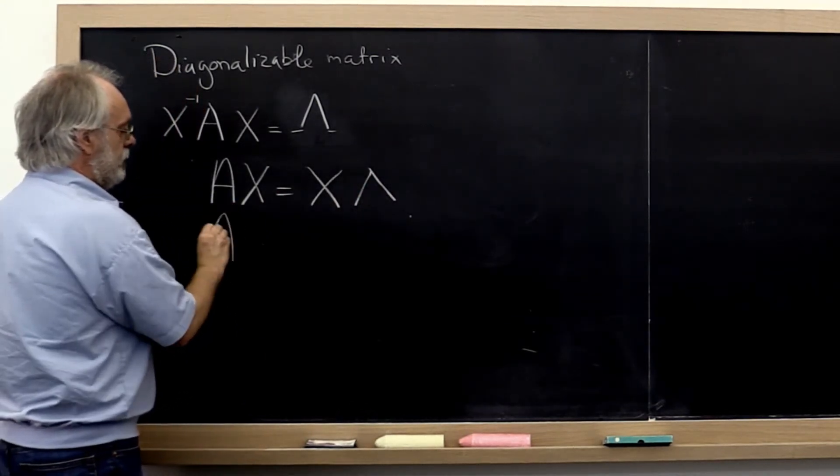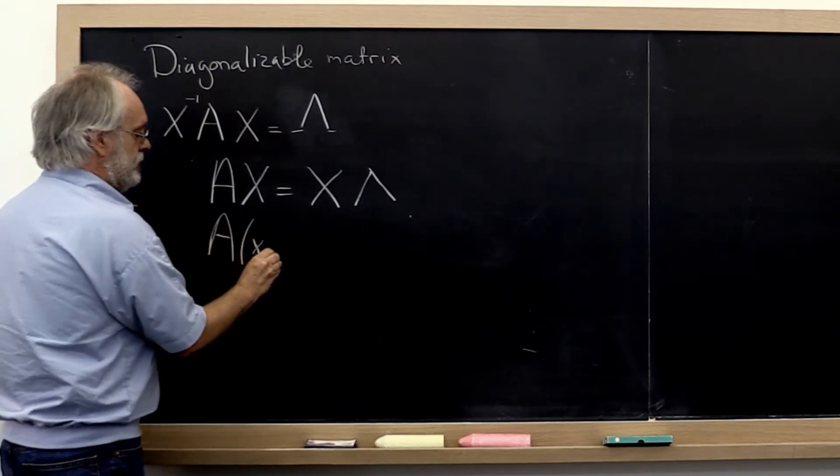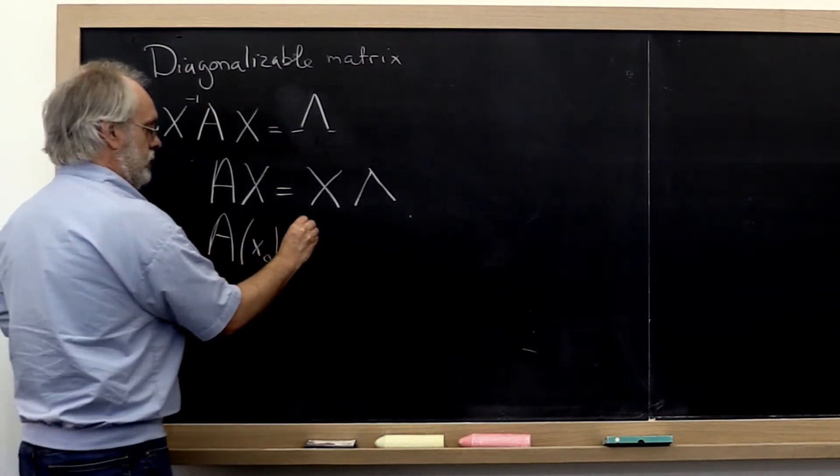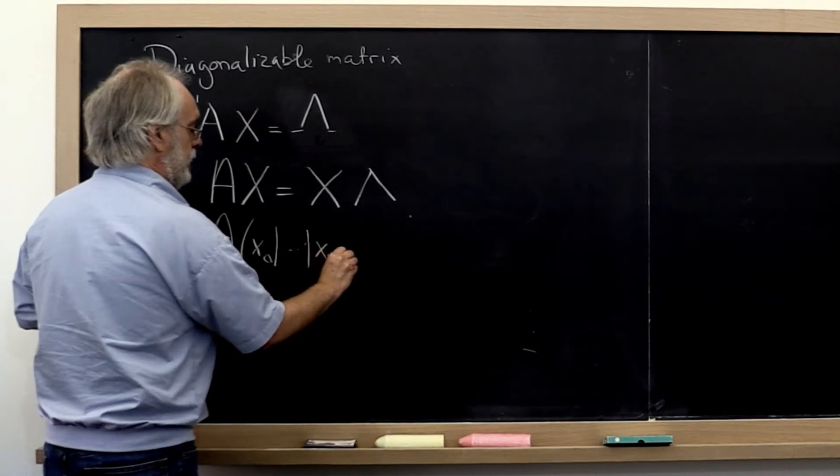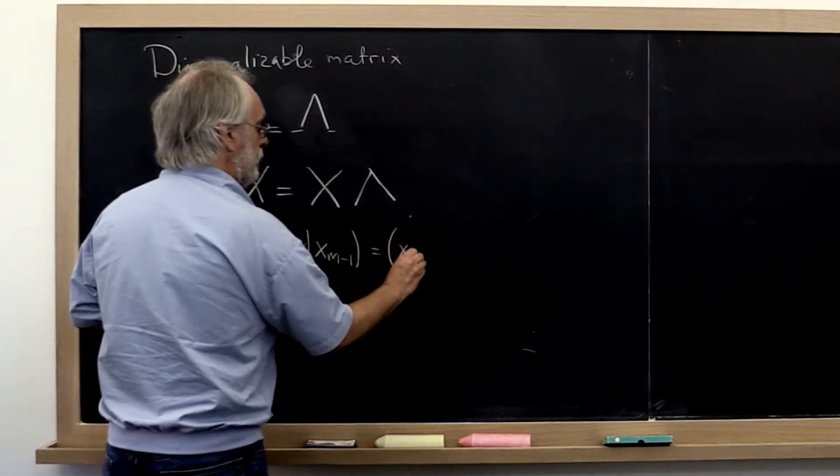We can say, let's take our matrix X and partition it by columns. We do that on the left and we do that on the right.